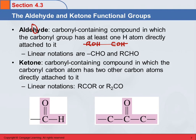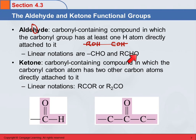Once you get the hang of these linear notations, they're really nice and convenient, but they can be a little confusing at first. The R here just stands for some hydrocarbon — something bonded to this carbon, which has a hydrogen and a double bond with oxygen. We understand the double bond to the oxygen because we know oxygen has to have two bonds and carbon has to have four. It's a very shorthand way of indicating aldehydes.